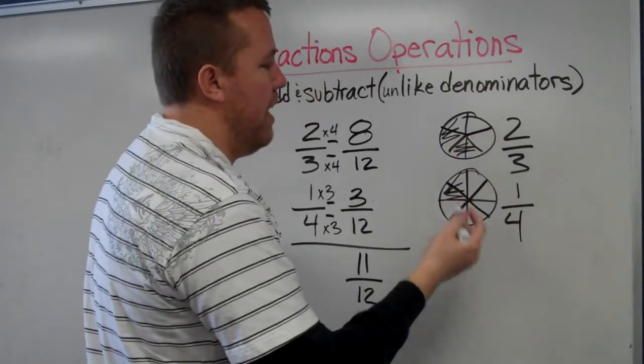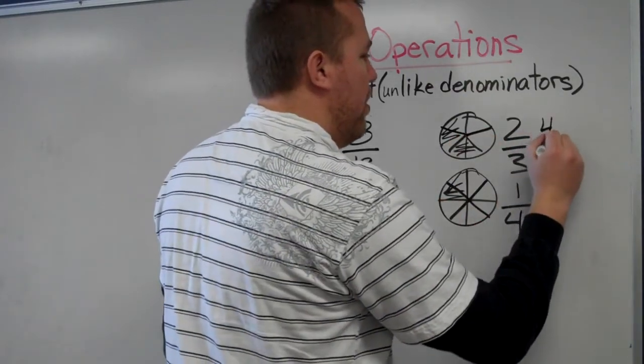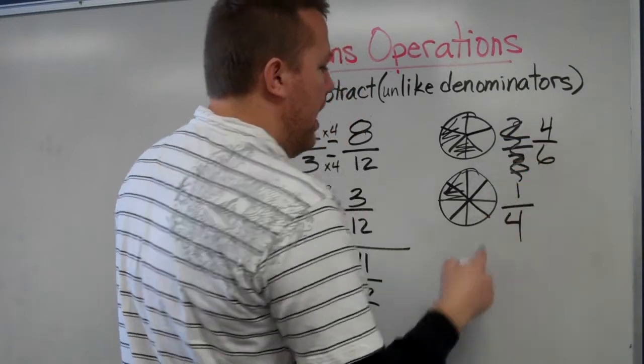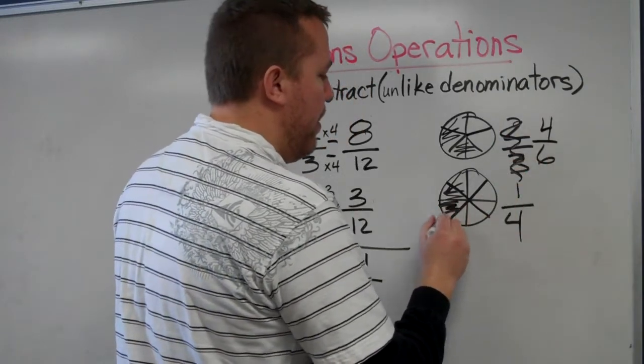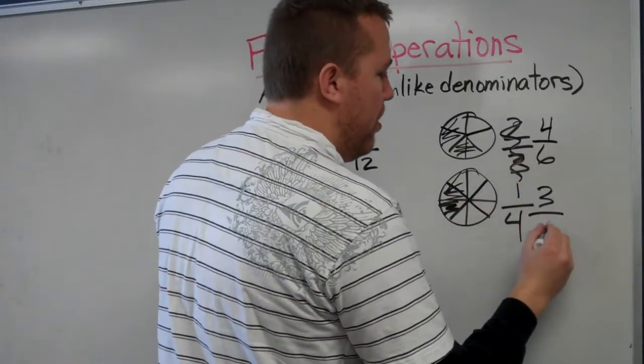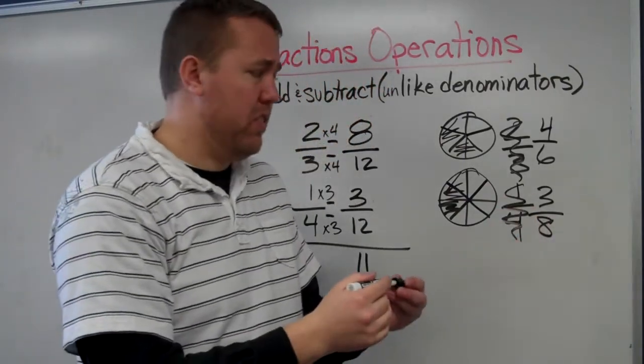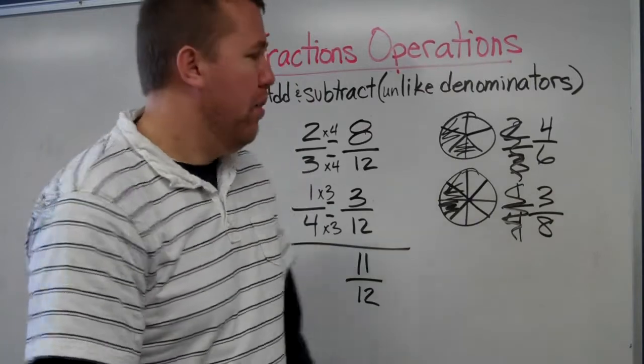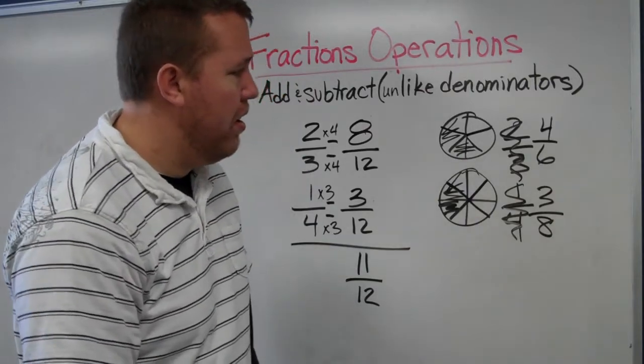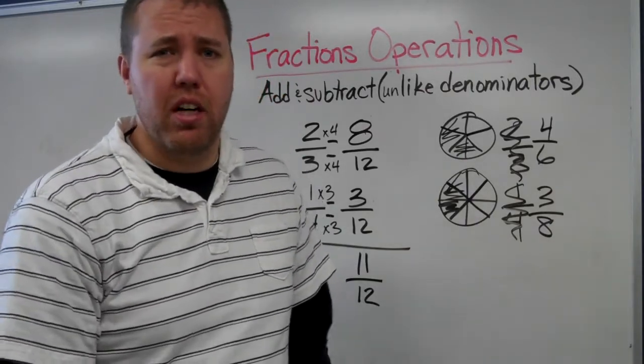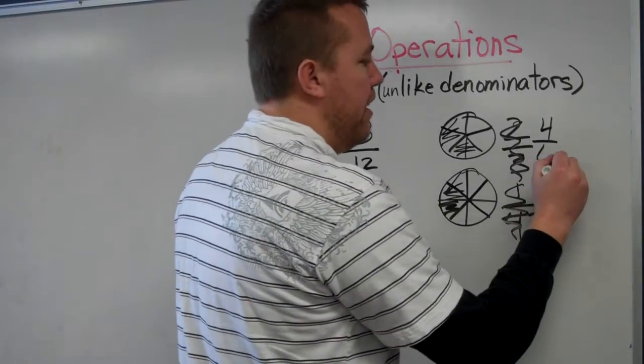Let's say I have four-sixths and I want to subtract three-eighths. What do I do? Four-sixths minus three-eighths. Well, I find the least common denominator.